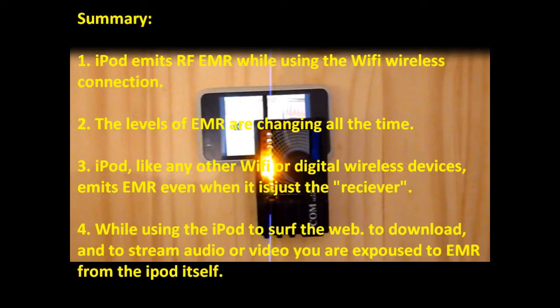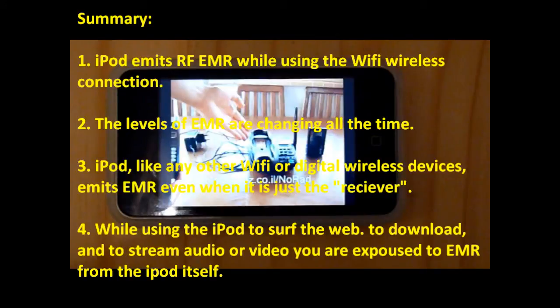Summary: 1. The iPod emits RF electromagnetic radiation while using the Wi-Fi wireless connection. 2. The levels of electromagnetic radiation are changing all the time. 3. The iPod, like any other Wi-Fi or digital wireless device, emits electromagnetic radiation even when it is just a receiver.